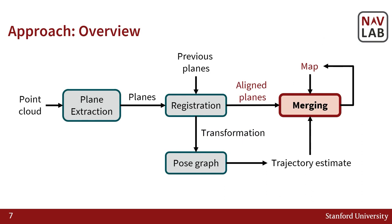Finally, the transformation from registration is used to align the new planes in the global frame, which are then merged with the current map planes to update the map. A pose graph is maintained and re-optimized in the event of a loop closure, updating both the trajectory and map.